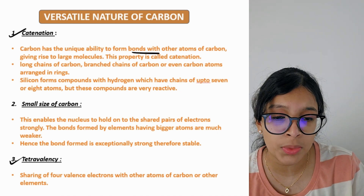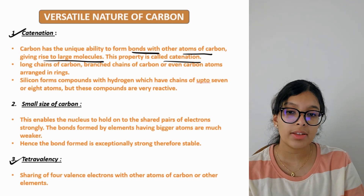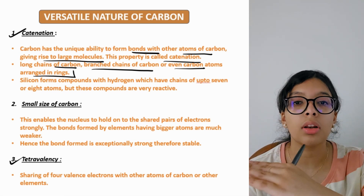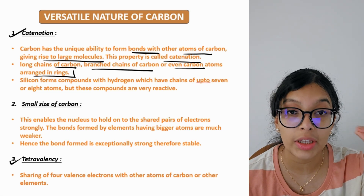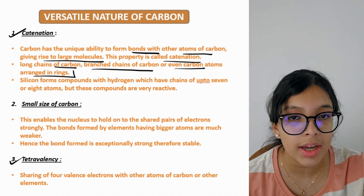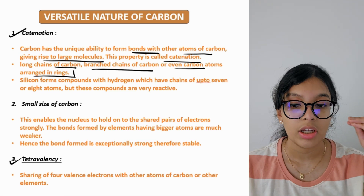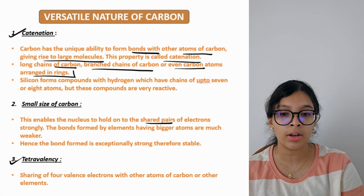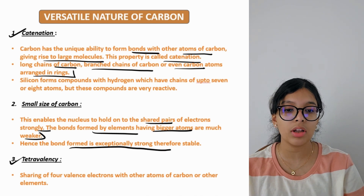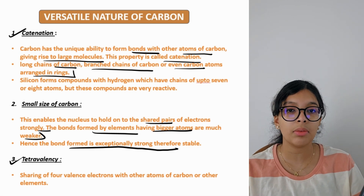Catenation: carbon has a unique ability to form bonds with other atoms of carbon, giving rise to long chains or large molecules. Long chains, branched chains, or even carbon atoms arranged in rings — this ability to form long chains or rings is called catenation. Another reason for carbon's versatility is its small size, which enables the nucleus to hold on to the shared electron pairs strongly, forming exceptionally strong and stable bonds.